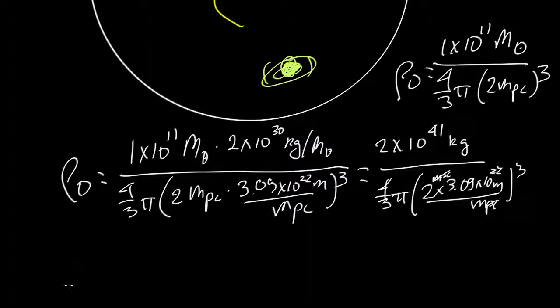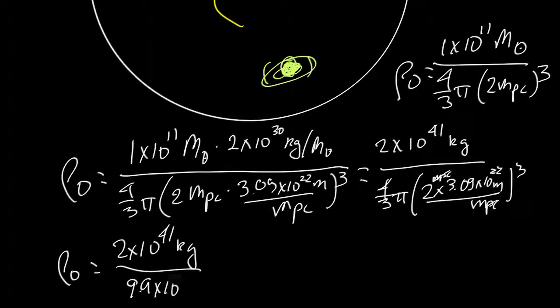So this gives us then, for the calculation of the density, 2 times 10 to the 41 kilograms in the top, and a volume of 9.9 times 10 to the 68 meters cubed. And that gives us a total density in our part of the universe of 2 times 10 to the minus 28 kilograms per meter cubed.